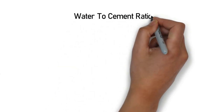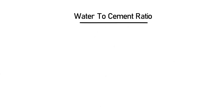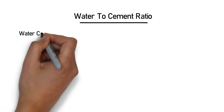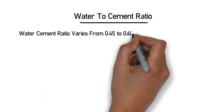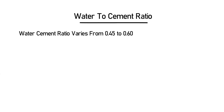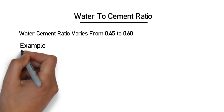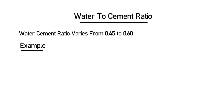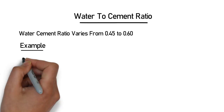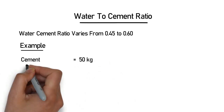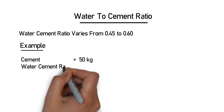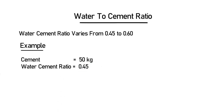Let's begin. As we all know, the water to cement ratio varies from 0.45 to 0.60. Let's take an example: if you want to find the water required for 50 kg of cement, the cement is equal to 50 kg. We will take the water cement ratio equal to 0.45 in this example.